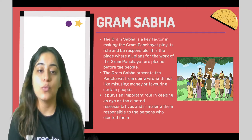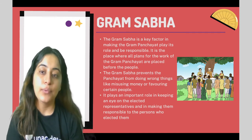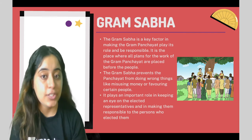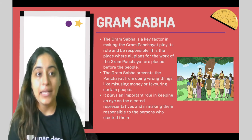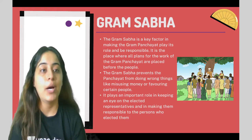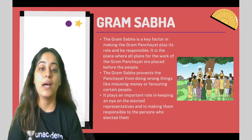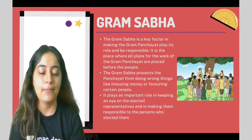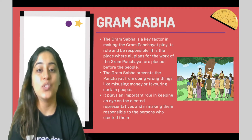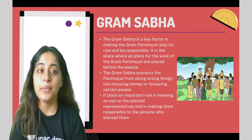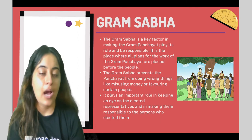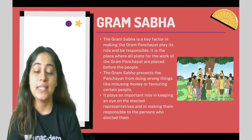The Gram Sabha is the place where all plans for the work of the Gram Panchayat are placed before the people. Whatever the local government decides — the steps it plans to take, the decisions it makes to create a better situation in the area — all those plans are placed before people at Gram Sabha meetings. Then after these meetings, the Gram Panchayat implements the work. The Gram Sabha also prevents the panchayat from doing the wrong thing, such as misusing money or favoring certain people, since every plan has to be presented before the Gram Sabha and they can be held accountable.